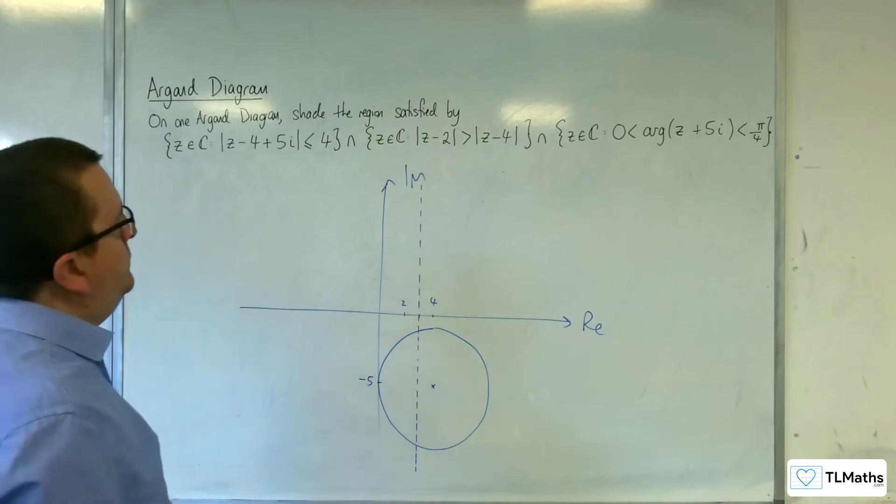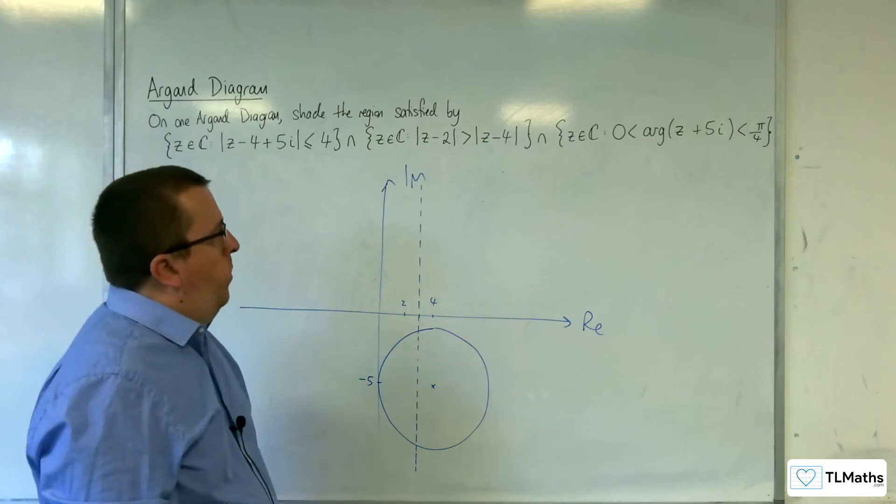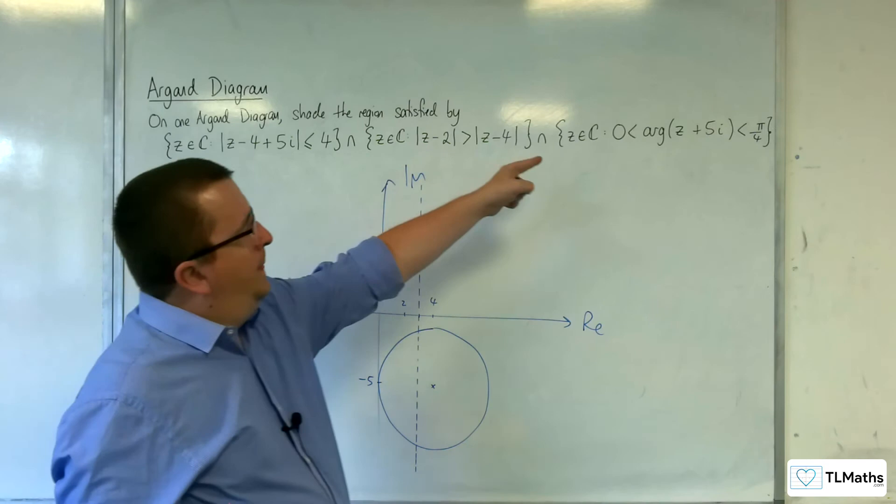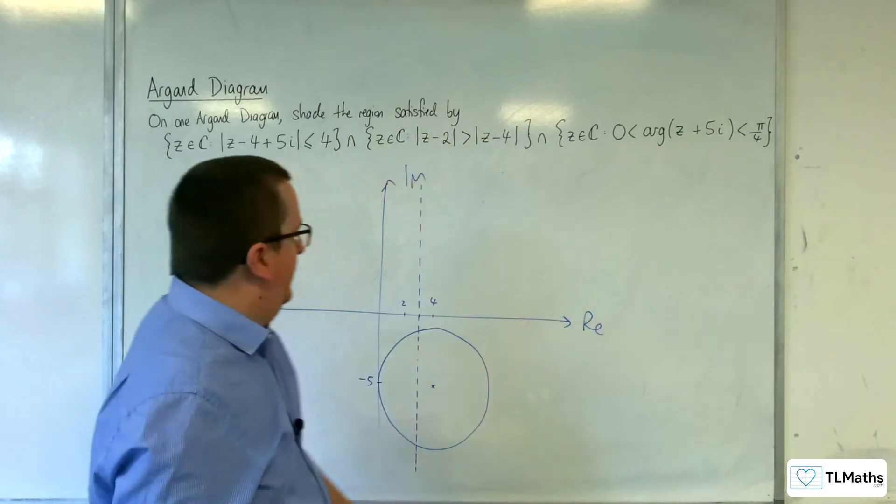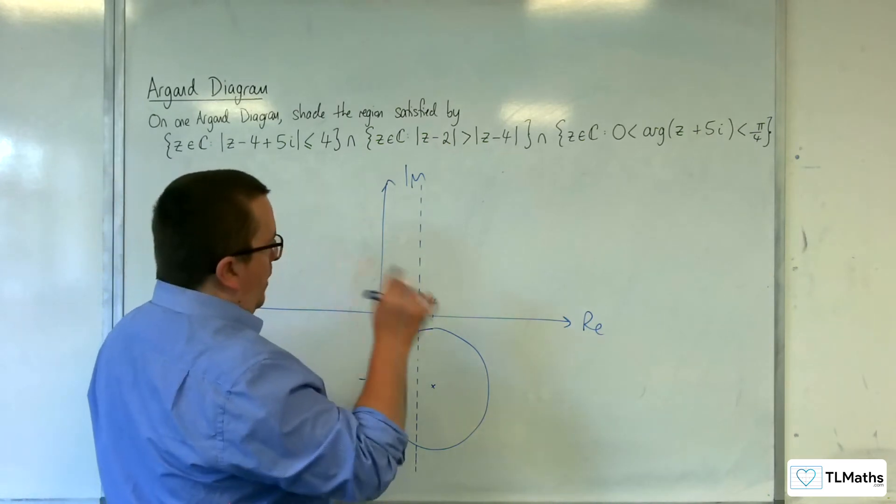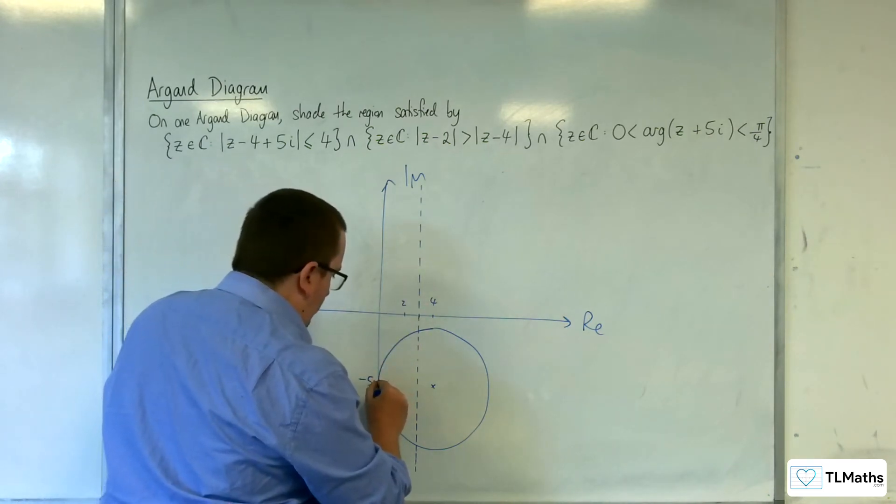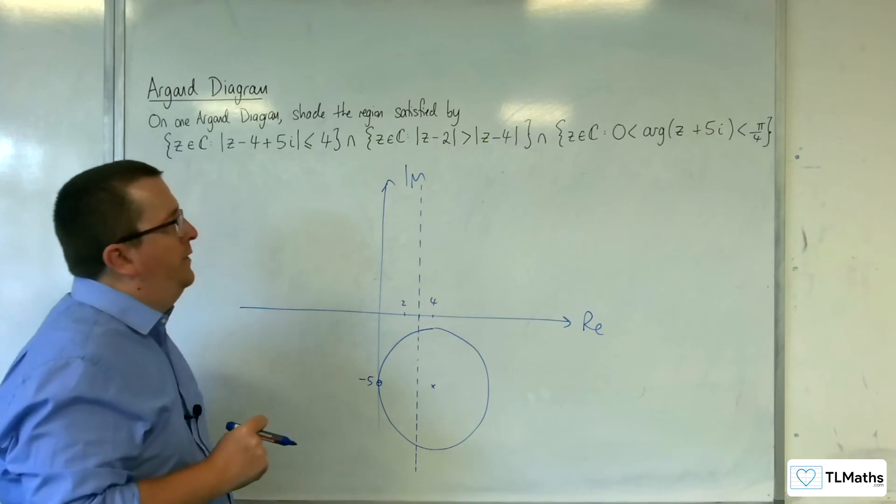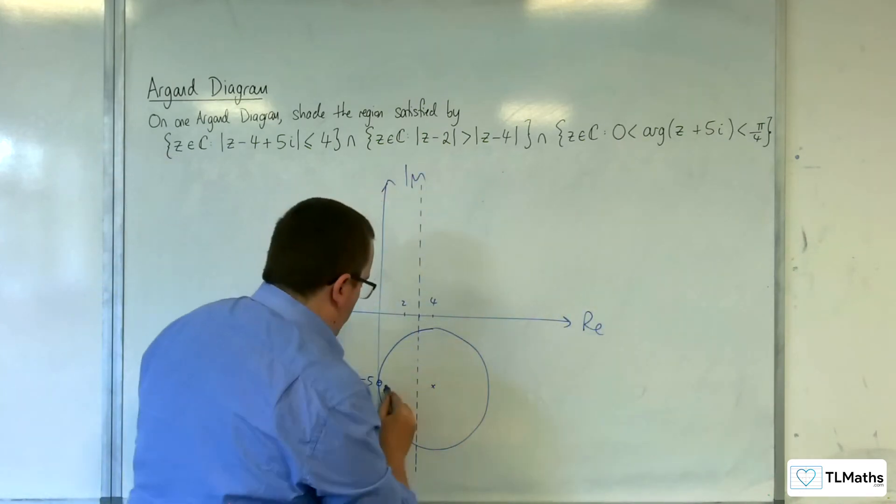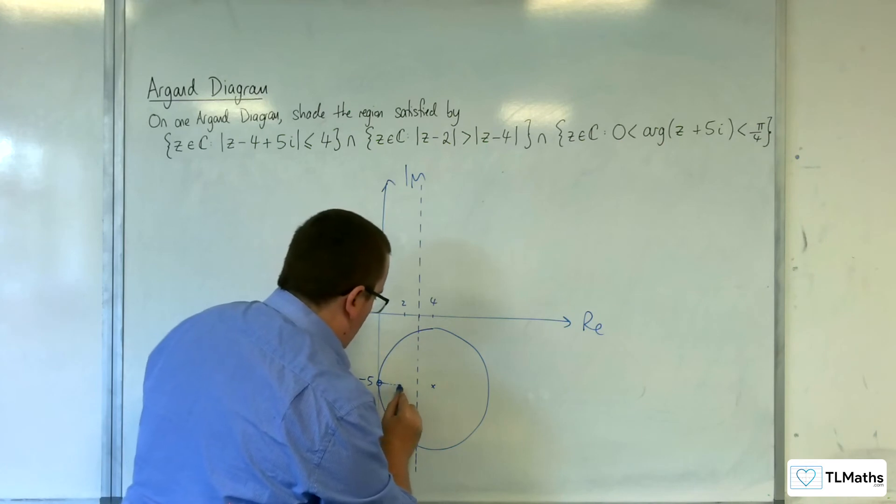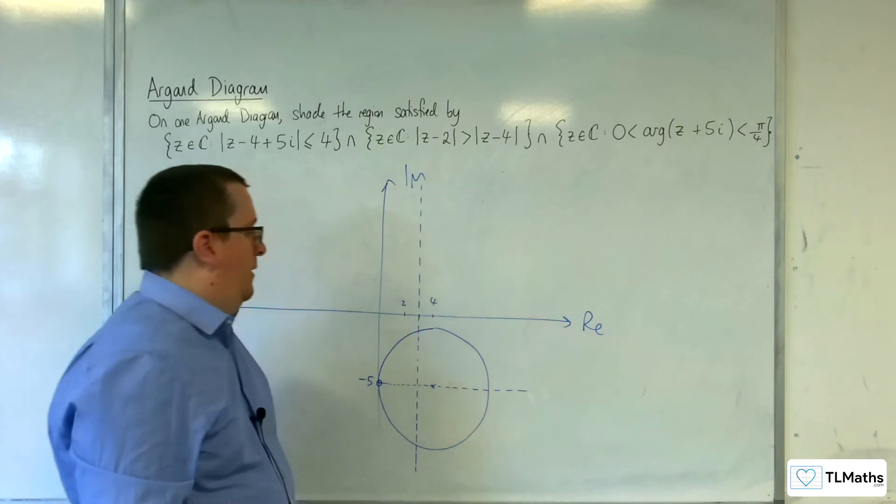So, last bit is this one here. So, the argument of z plus 5i, so we're centered at minus 5i, which is there. Well, starting there, rather than centered. Now, greater than 0, so dotted line, argument of 0. Horizontal line.